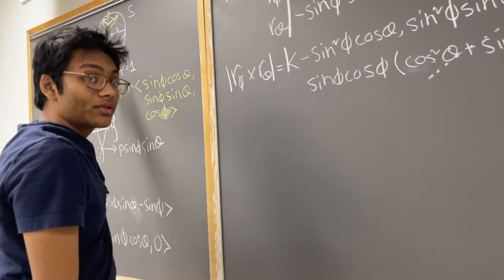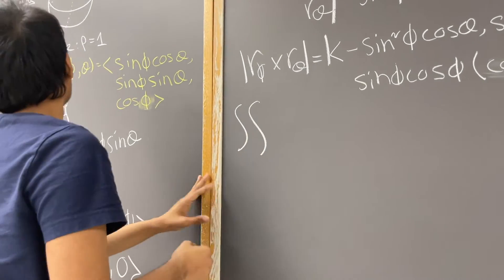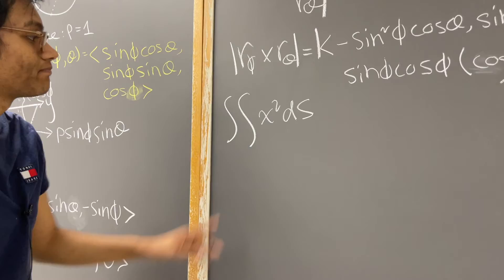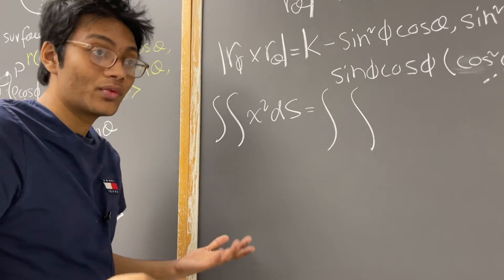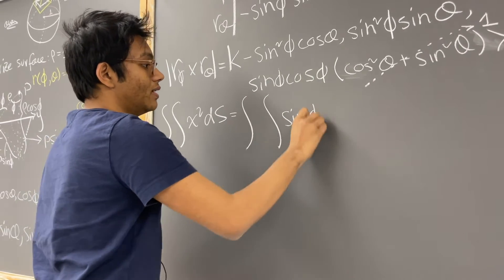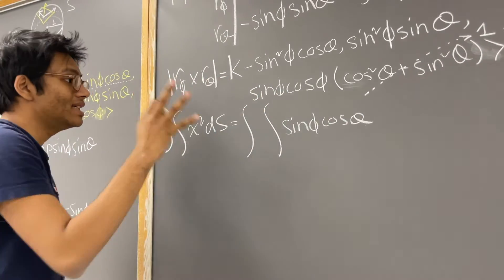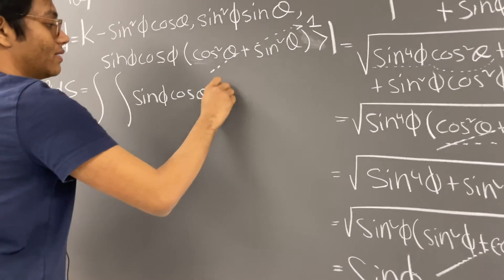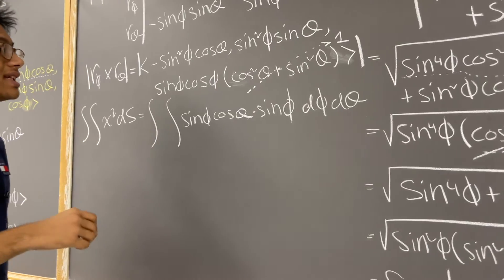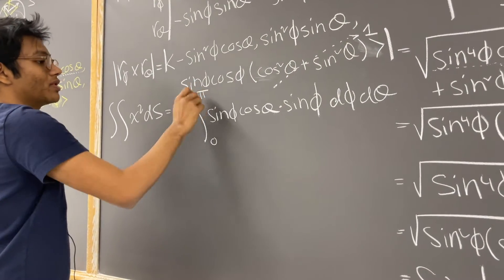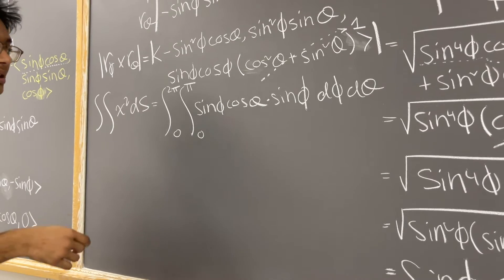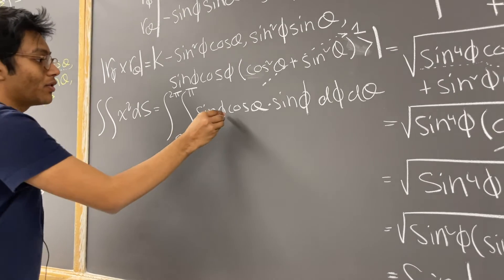Now we can come back to our integral. We write the double integral of x squared ds. We know x is just the x component of our parametrization: sine phi cosine theta. And ds is nothing more than sine phi — that's the magnitude of our cross product — times d phi d theta. Phi goes from 0 to pi, and theta goes from 0 to 2 pi. Students often mess up and put 2 pi for both, but that's not the case — if you look at the 3D version you'll understand why.